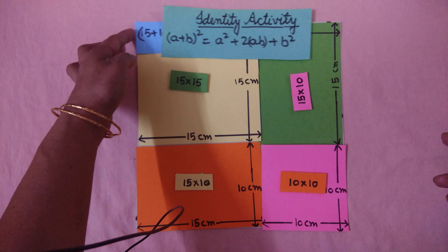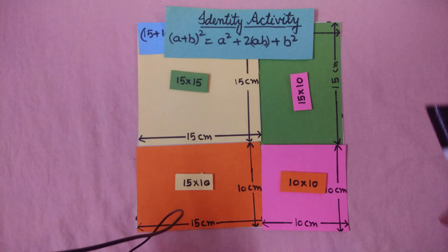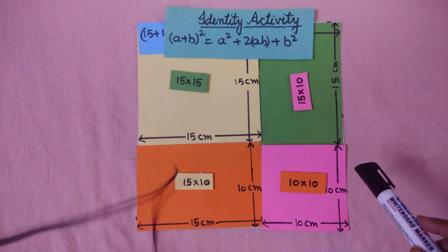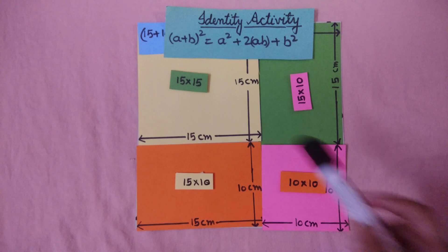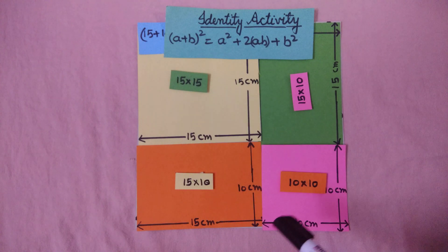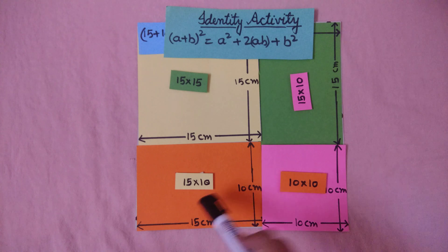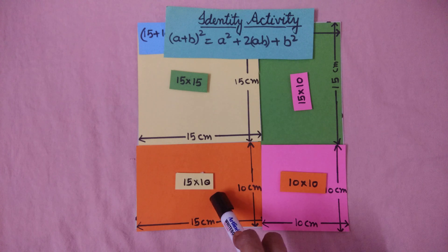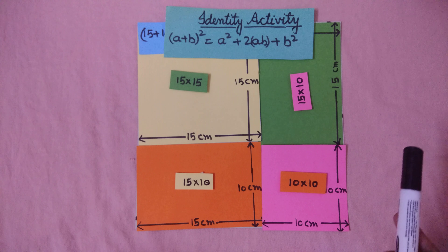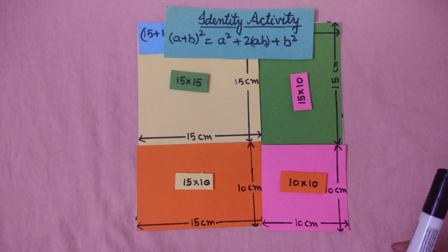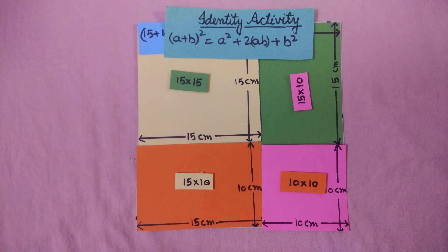Now students, with the help of this activity, you can do this in your copy. You can take measurements of a and b as you choose — I have taken a as 15 and b as 10, but you can take any measurement and try this activity at home. Thank you and have a nice day.